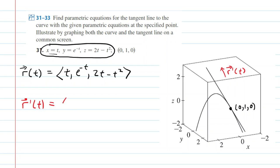We take the derivative of the individual components. So the derivative of t is 1. The derivative of e to the negative t would be e to the negative t, but then don't forget to multiply by the derivative of the negative 1t in the exponent. So that's just times negative 1. And then for the derivative of the z component, we have 2 minus 2t.